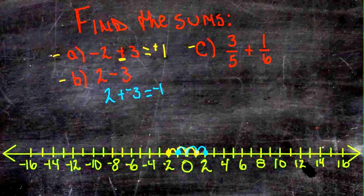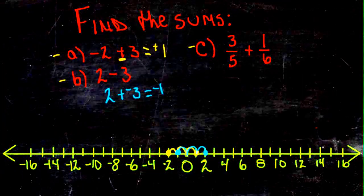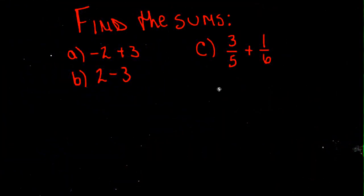Now, for our third example, I'm actually going to hide the number line because we don't really need it. To find the sums of fractions, we have to first find a common denominator for the fractions.